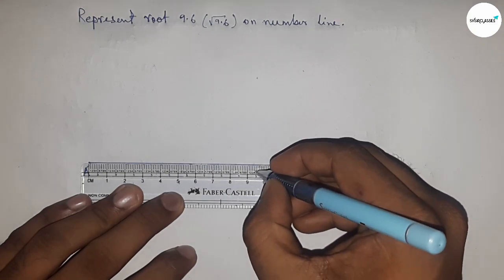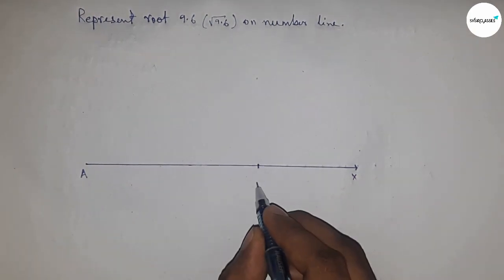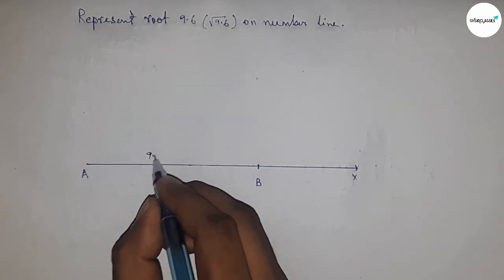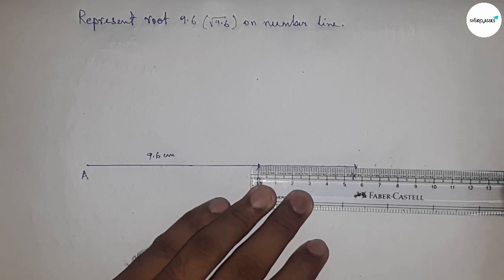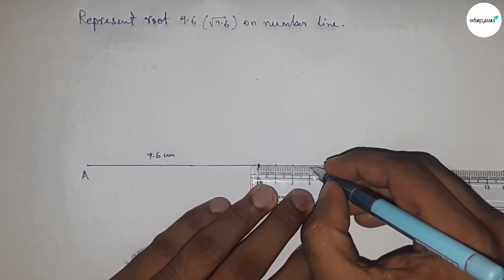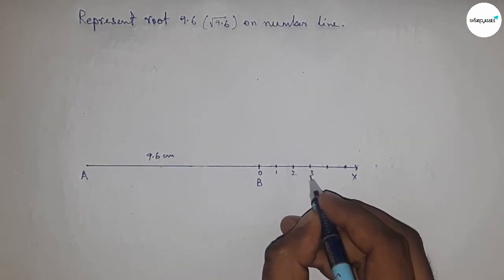This is 9.6 centimeters. Mark this as point B, so AB equals 9.6 centimeters. Next, mark the numbers on the line from B to X using a scale: 0, 1, 2, 3, 4, 5, and so on. Mark this as point C.